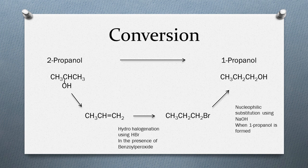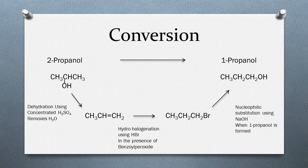So that's how we can convert 2-propanol to 1-propanol. To summarize: starting with 2-propanol, we use concentrated sulfuric acid to perform an elimination reaction and obtain propene. Propene, when treated with HBr in the presence of benzoyl peroxide, gives 1-bromopropane as the major product. Then 1-bromopropane undergoes nucleophilic substitution to form 1-propanol.